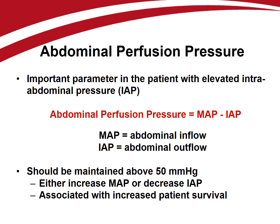Perfusion of the abdominal organs is an important parameter in any critically ill patient. Mean arterial pressure is the inflow pressure to the abdomen, while central venous pressure or intra-abdominal pressure — whichever is higher — is the outflow pressure. Abdominal perfusion pressure is thus mean arterial pressure minus intra-abdominal pressure, and should be maintained above 50 mmHg to ensure adequate visceral perfusion and function. This can be achieved by increasing mean arterial pressure using fluids or vasopressors, or decreasing intra-abdominal pressure through medical interventions or surgically through a decompressive laparotomy. Maintaining adequate abdominal perfusion pressures is also associated with improved patient survival.